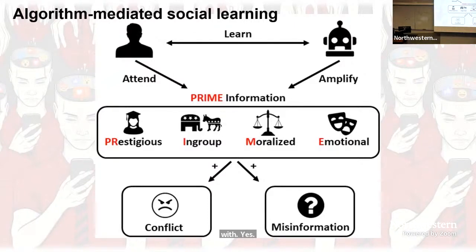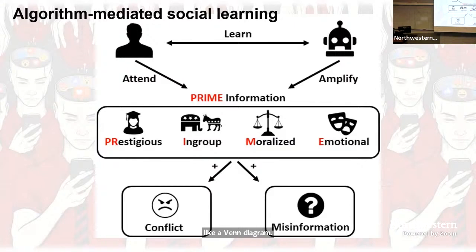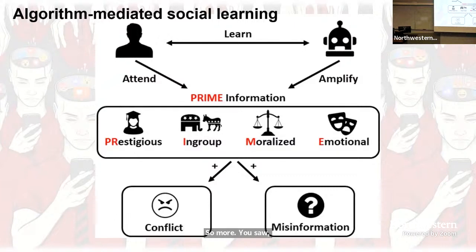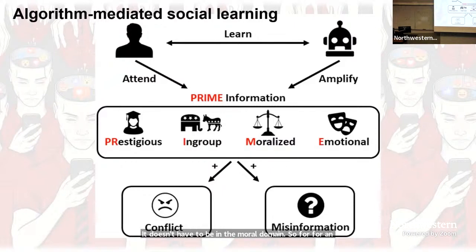There's certainly a big overlap between emotional and moral content — think of it almost like a Venn diagram. You can have emotional content that isn't necessarily moralized. A moral emotion, one related to morality, is elicited by a perceived violation or transgression against a moral norm. But you can also have emotions about lots of things that don't involve morality. So for an emotion to be in the moralized domain, it really has to be triggered by our sense of right and wrong. It's a fuzzy distinction, but I think you can make it.